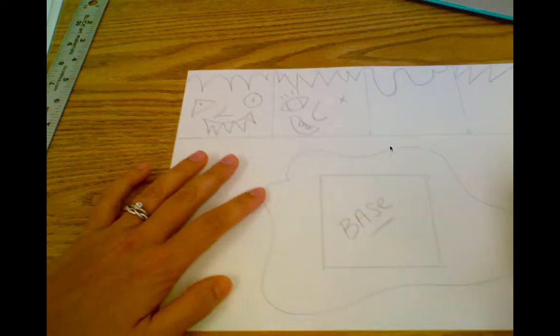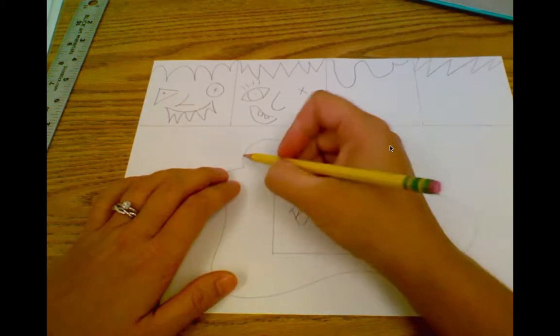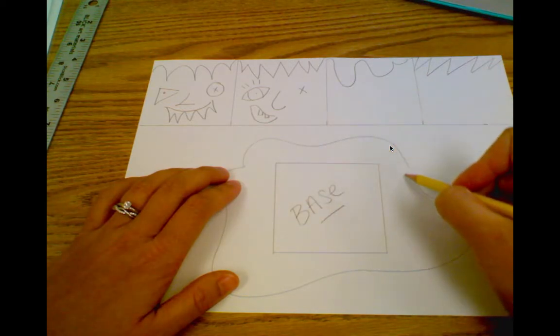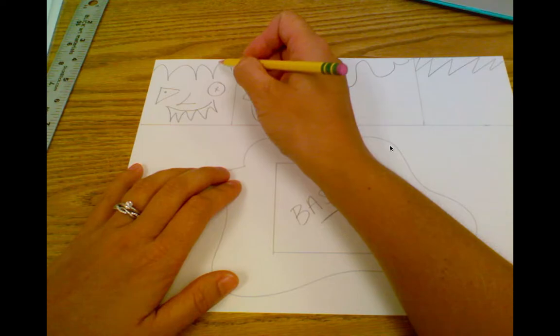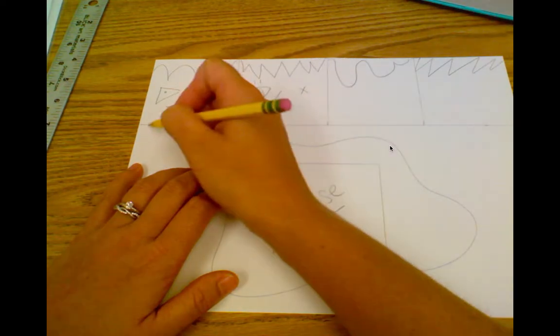After I have all four sides figured out, I'm going to cut along this outside edge of my base and then I'm going to cut along the top of my hair and then the sides.